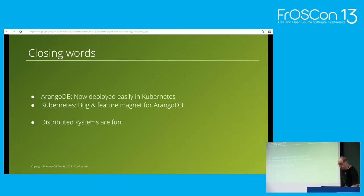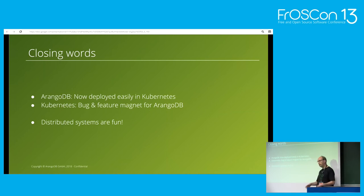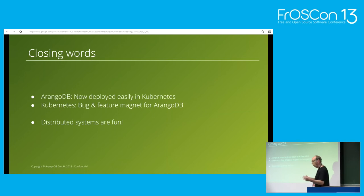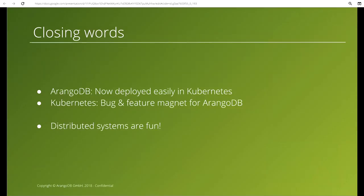Some closing words: you can deploy ArangoDB very quickly now on Kubernetes. It took about two minutes and we have a cluster up and running, without writing any long YAML — just a couple of lines. An interesting side effect of creating this thing is that Kubernetes turned out to be a really big bug magnet for ArangoDB. We found so many bugs in ArangoDB just by running it here and trying to get the resilience business completely automated.